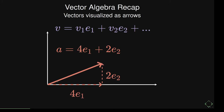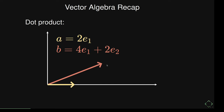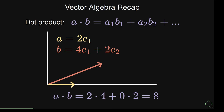We have the dot product, which tells you something about the similarity between two vectors and the angle between them. If they are parallel, the dot product is bigger; if they are orthogonal, the dot product is zero. For basis vectors: the dot product of two of the same basis vectors gives one, and of two different basis vectors gives zero — that's what the Kronecker delta symbol stands for.